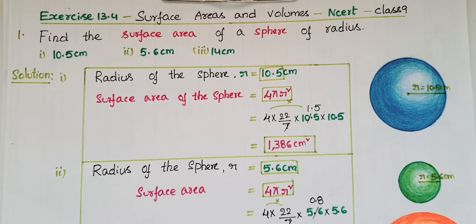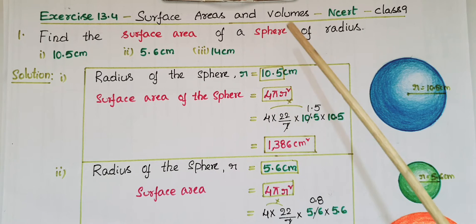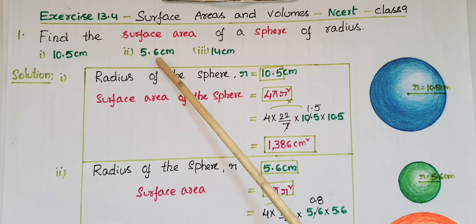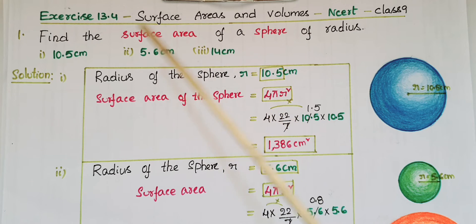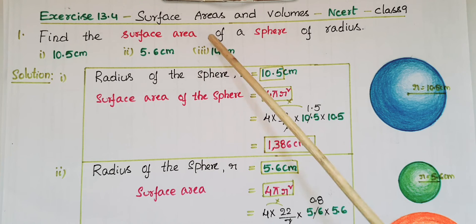Hello everyone. Today I am going to tell the solutions of Exercise 13.4 from Surface Areas and Volumes from NCERT Class 9. The first problem is: find the surface area of a sphere of radius 10.5 centimeters; the second one, 5.6 centimeters; and the third one, 14 centimeters. Different radii of the spheres are given and we have to find the surface areas.